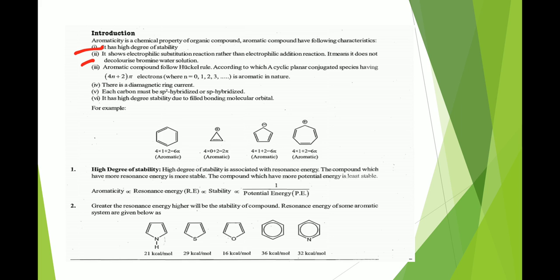For example, the first example contains six pi electrons, which means it is aromatic in nature. The second example contains two pi electrons, therefore it is also classified as aromatic in nature. The third and fourth examples are also aromatic compounds.